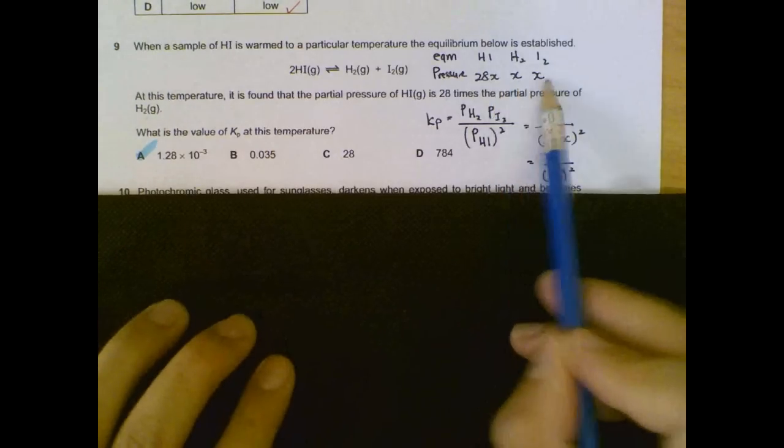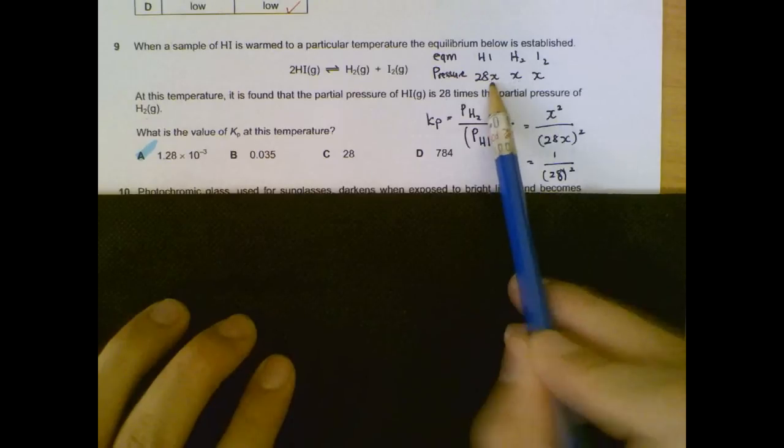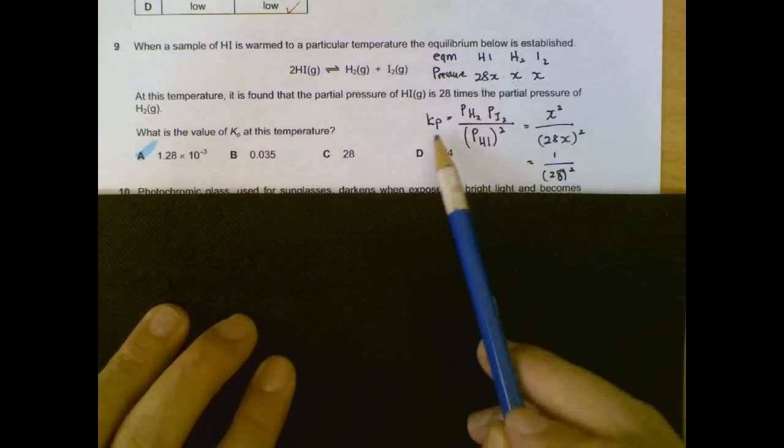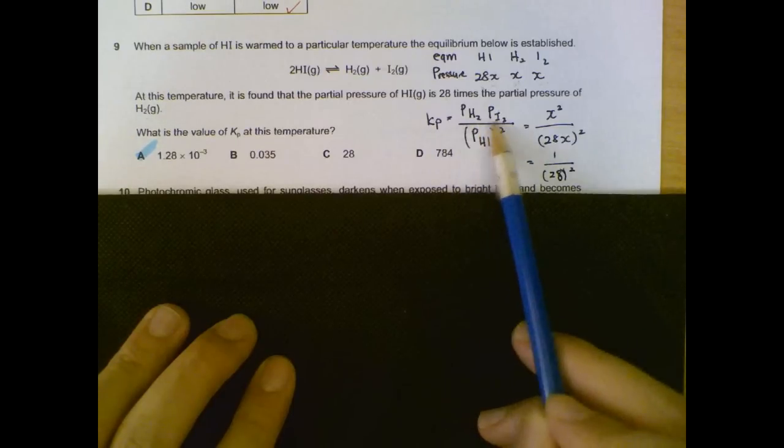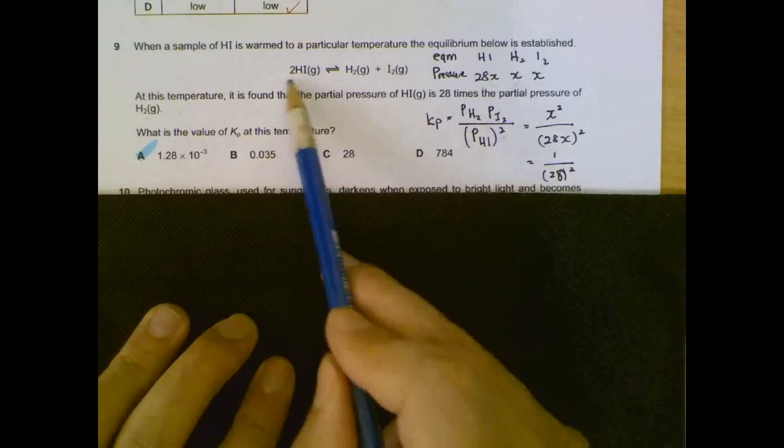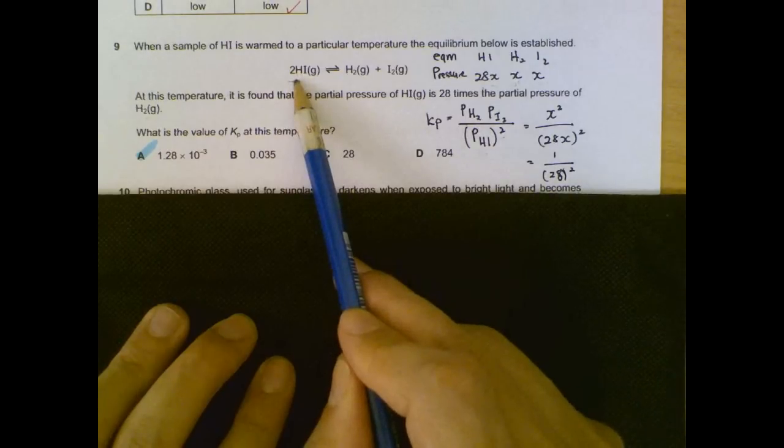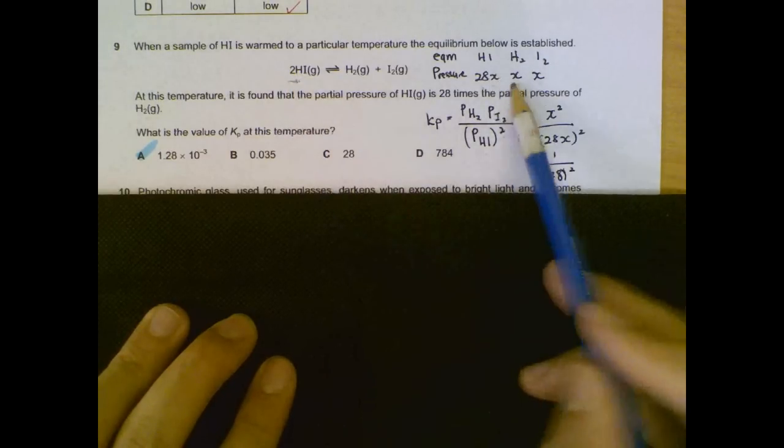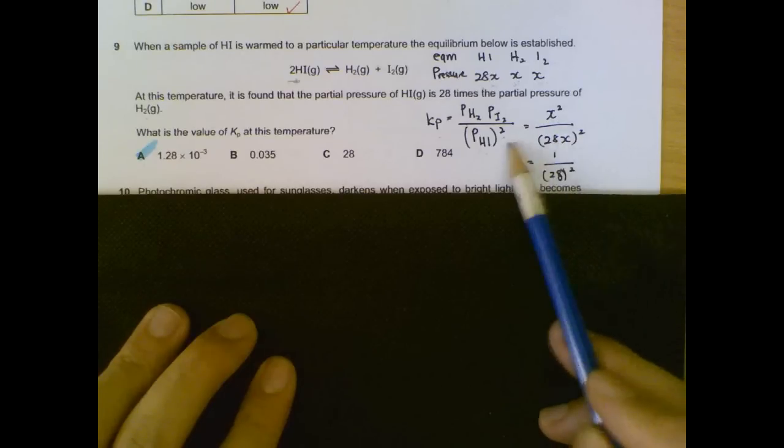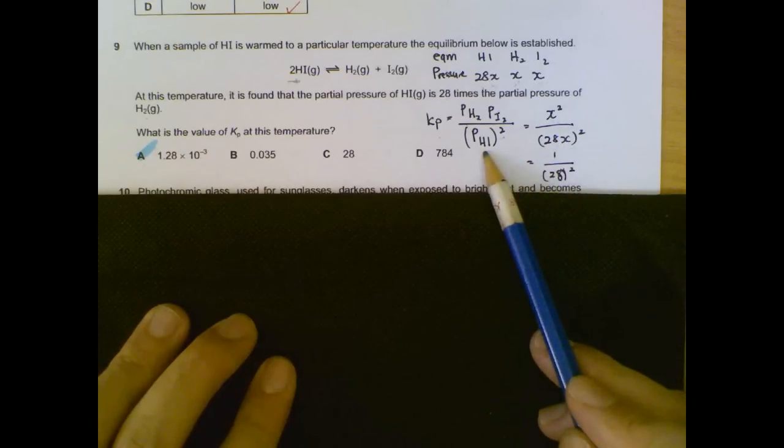So we do not know the exact pressure, but we know that if these two are x, then hydrogen will be 28x. We form an expression or equation for Kp pressure, H2, I2, and pressure of HI, we have to square it because of the ratio 2 here. We put in the values or the unknowns, x multiplied by x, x squared, 28x, which is the hydrogen iodide, we square the whole thing. So conveniently, we will have the x squares cancelling each other out.